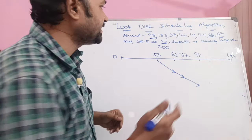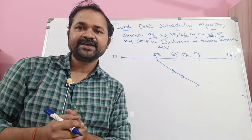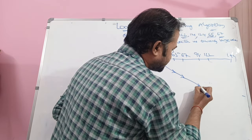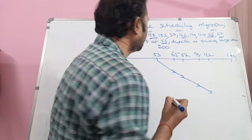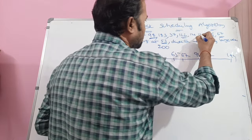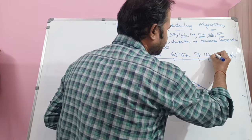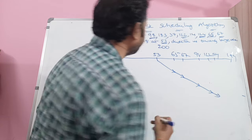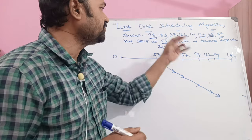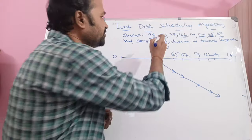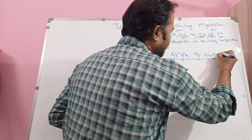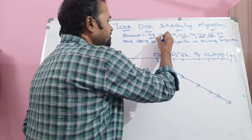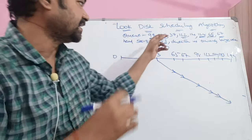The next highest value is 122, so we access the content of cylinder 122. The next highest value is 124, so we access the content of cylinder 124. After 124, the next highest value is 183, so we access the content of cylinder 183. This is the largest request in the queue.